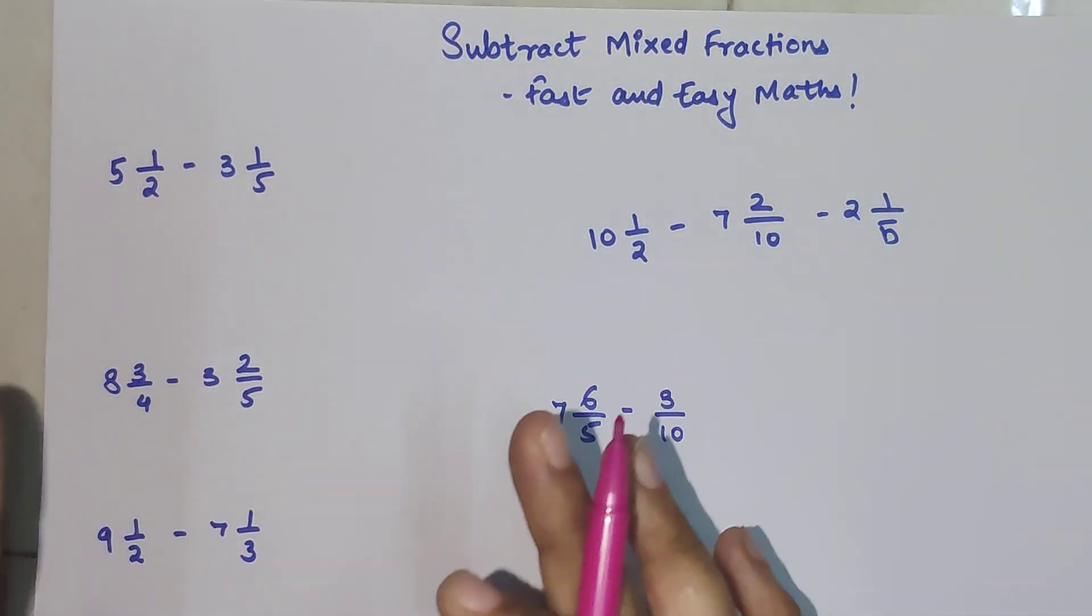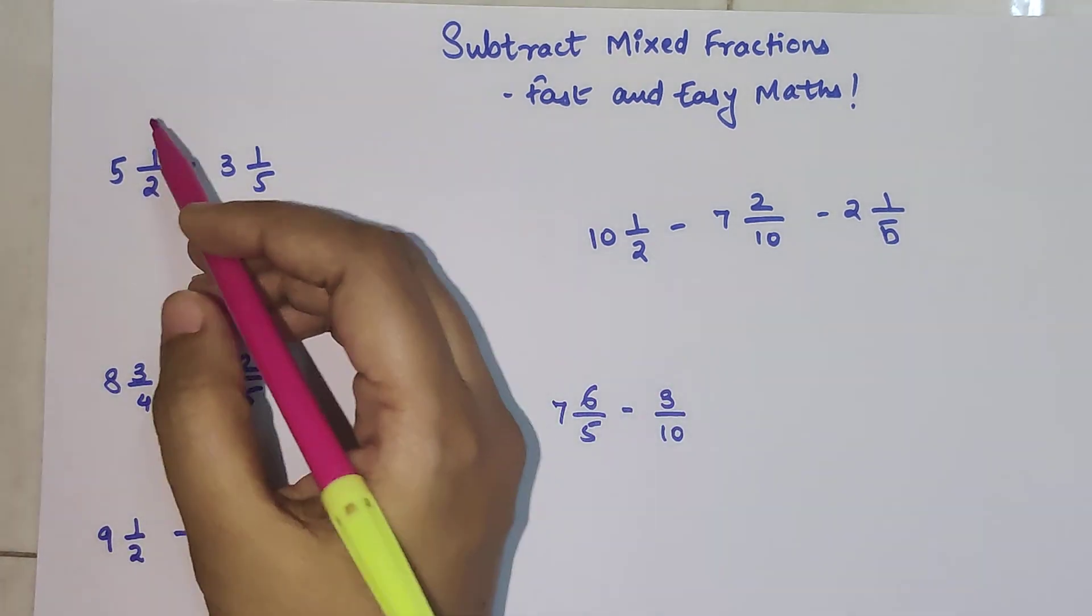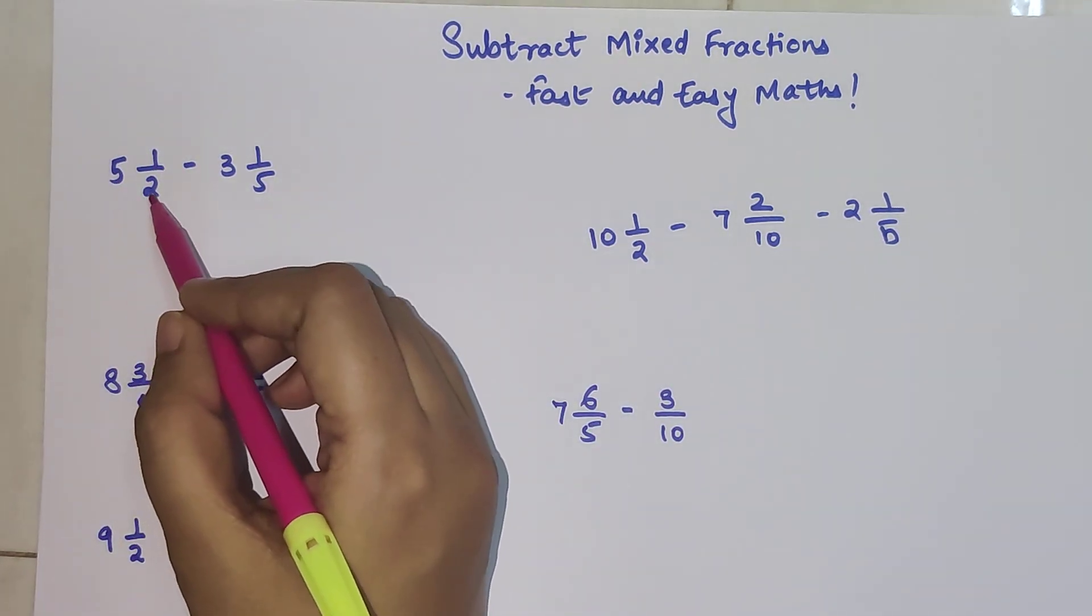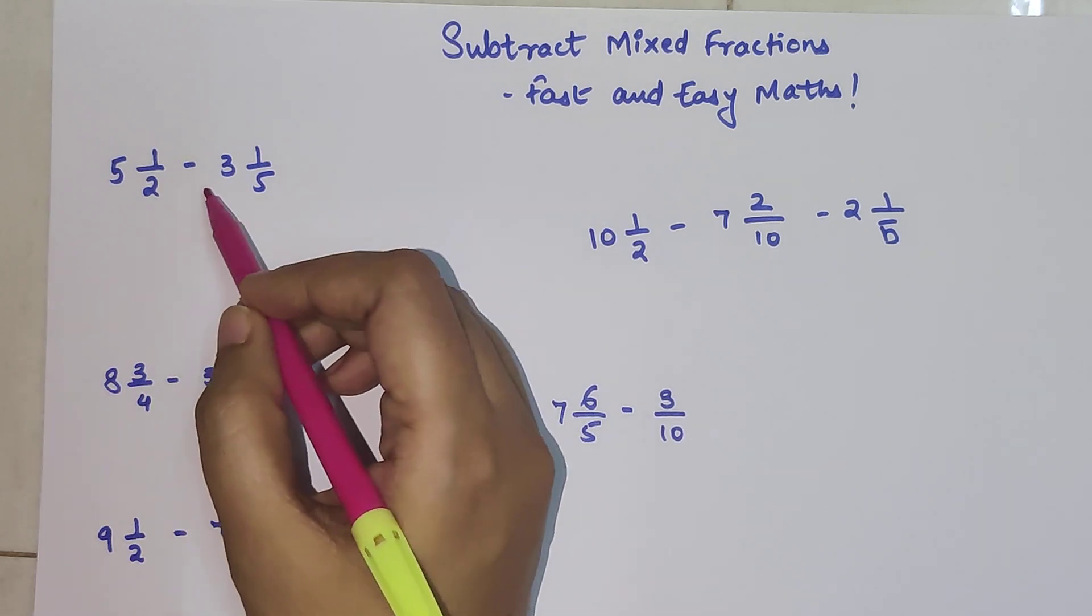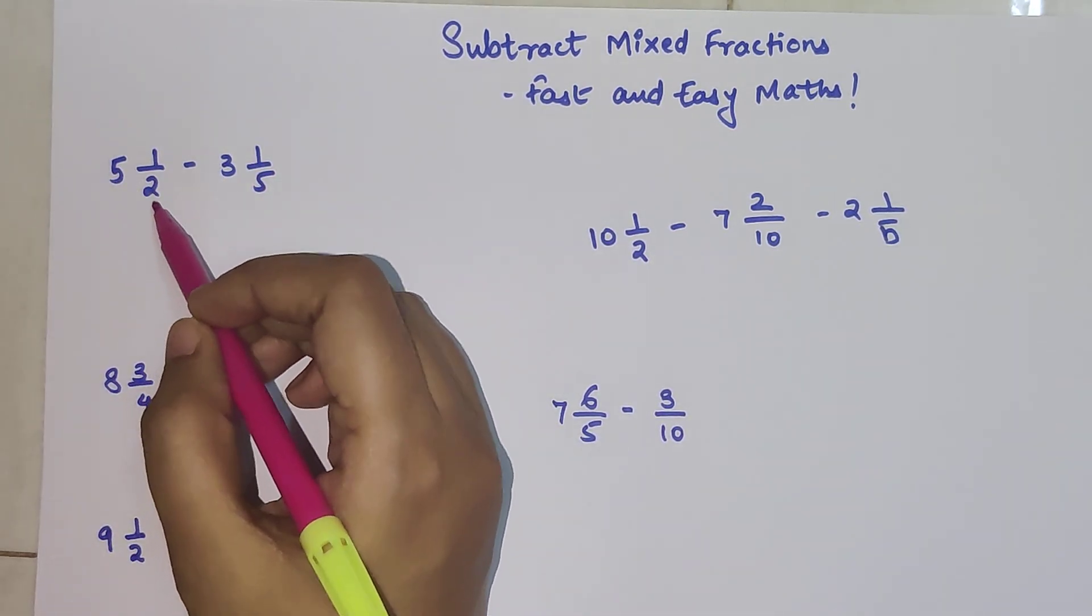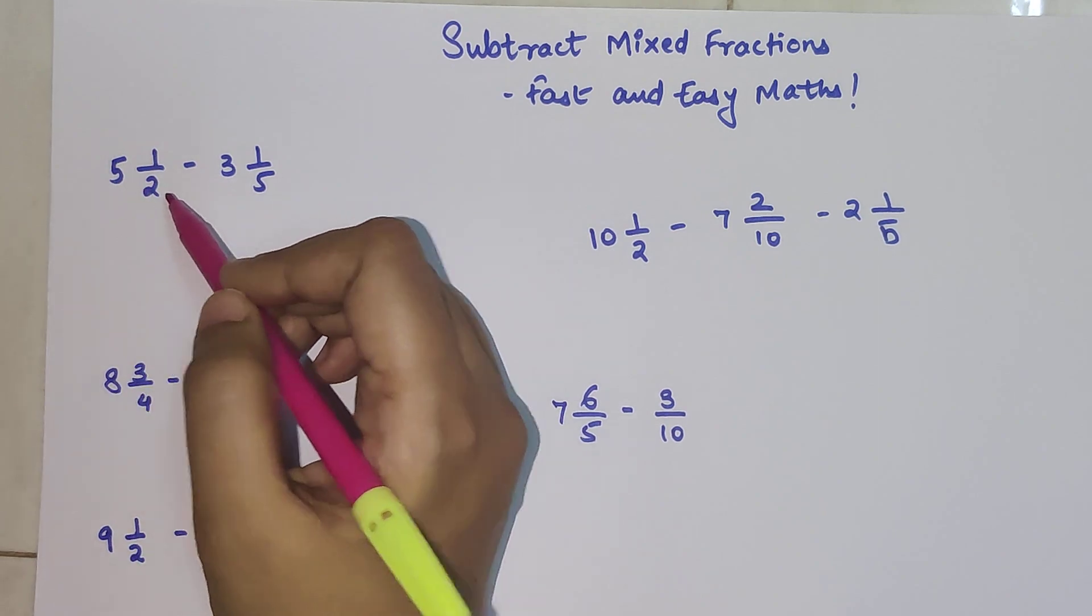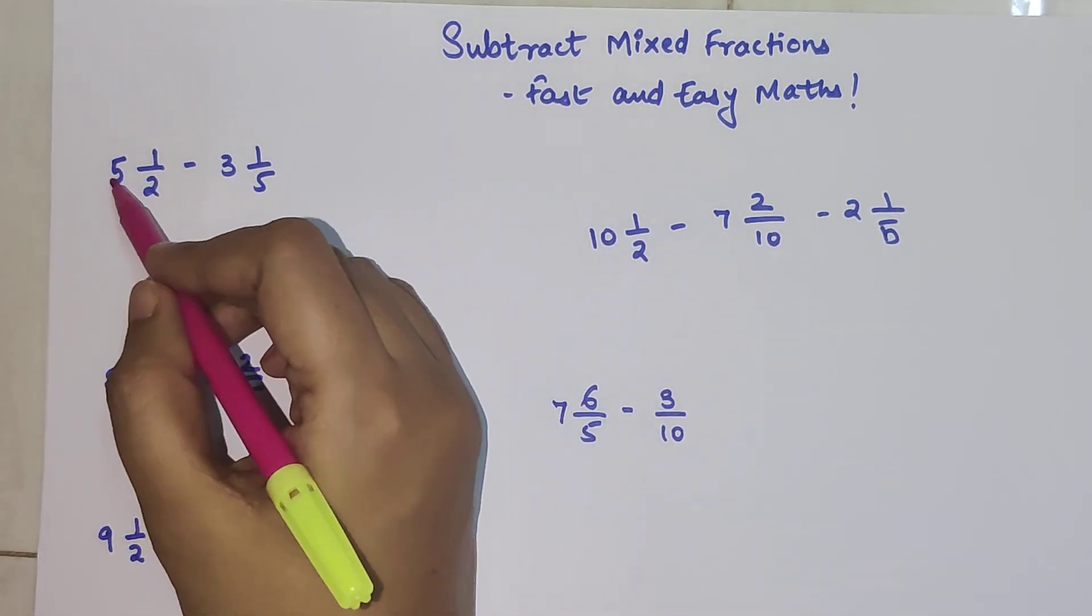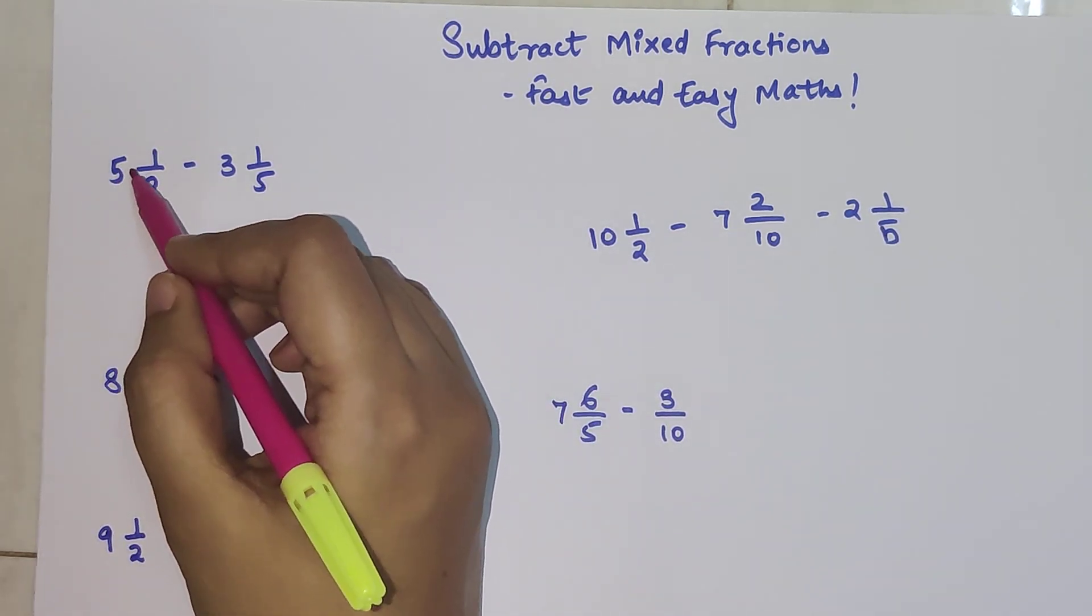First we'll understand how the traditional method works. Here you have 5 1/2 minus 3 1/5. If you convert this into an improper fraction, you get 5 multiplied by 2 which is 10, then add 1 to it.